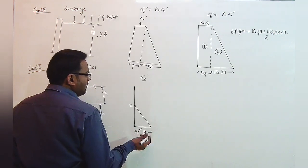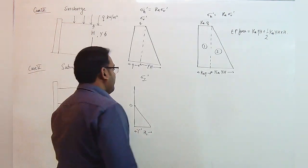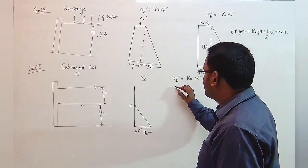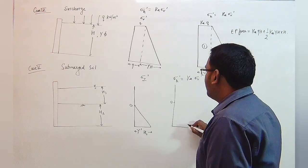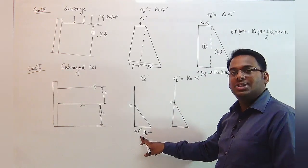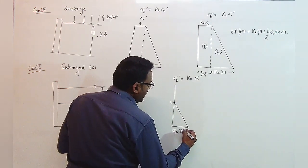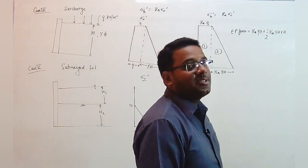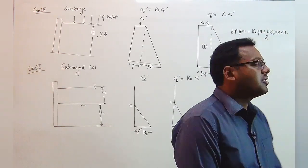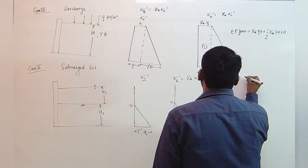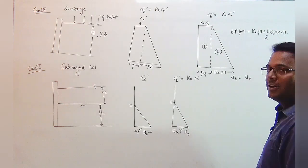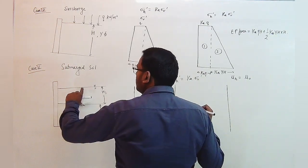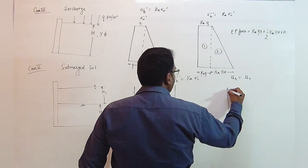Below the water table, effective stress increases by the value of gamma submerged (γ'). For depth H2, the total effective stress equals γ' · H2. The value of σh' equals Ka · σv', which is simply zero till the depth of H1. After that, as the increase in effective stress is γ' · H2, the increase in horizontal stress equals Ka · γ' · H2. Additionally, as water is also present, there will be pore water pressure in the horizontal direction equal to the pore water pressure in the vertical direction according to Pascal's law.